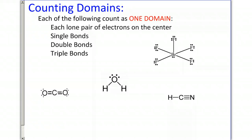You have to be able to count the domains in a molecule. To count a domain, there are several rules. Each of the following counts as one domain: each lone pair of electrons on the center atom is one domain, usually denoted by our bubble or alien head. If you have a single bond, that's counted as one domain, and double bonds count as one domain, and triple bonds count as one domain. I'm going to count the domains in each of the following. We'll start with CO2, which is this one over here.